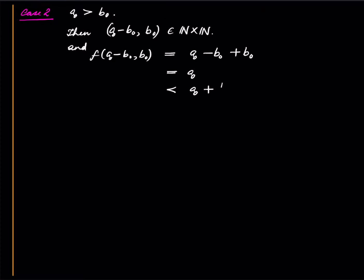And the size of this pair is A0 minus B0 plus B0, which is equal to A0, which is strictly less than A0 plus B0, which is equal to F of A0 comma B0. So therefore this pair A0 minus B0 comma B0 this cannot lie in S.